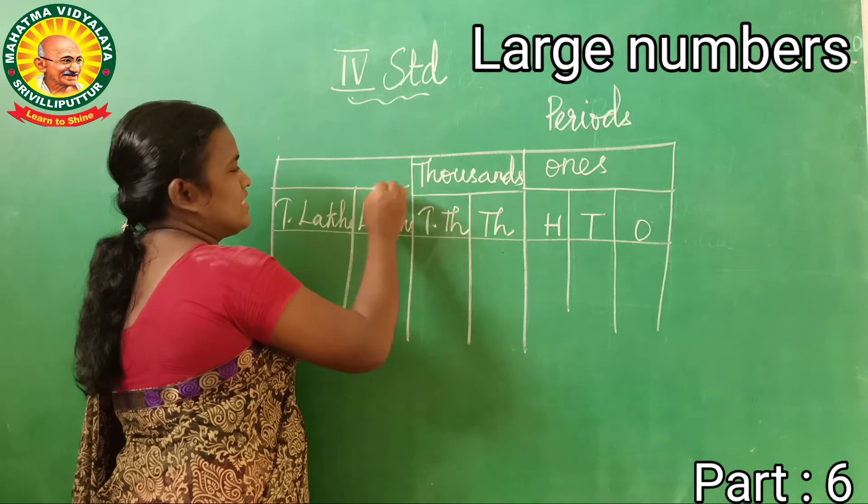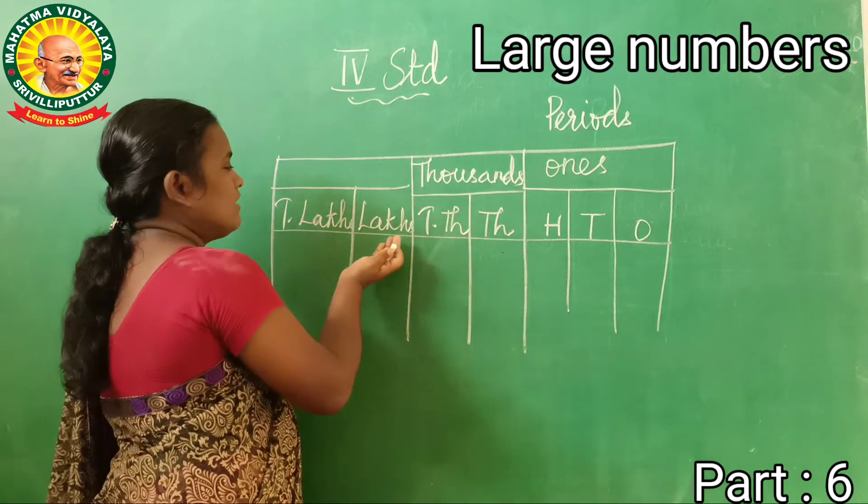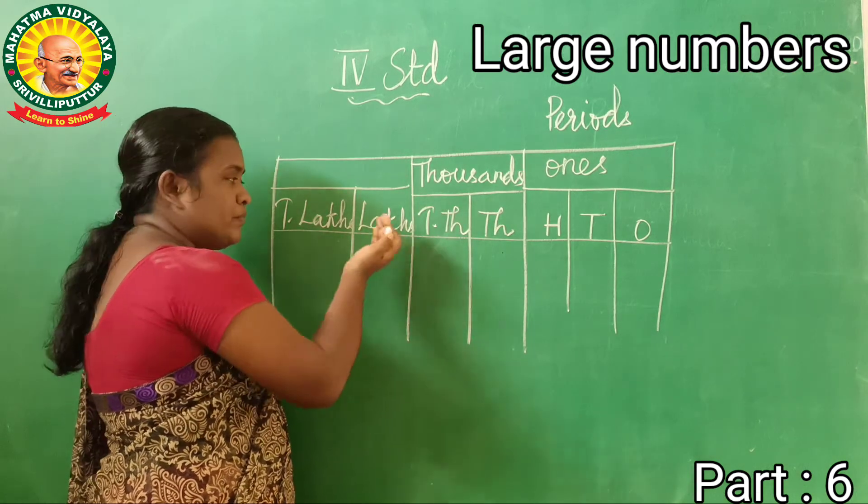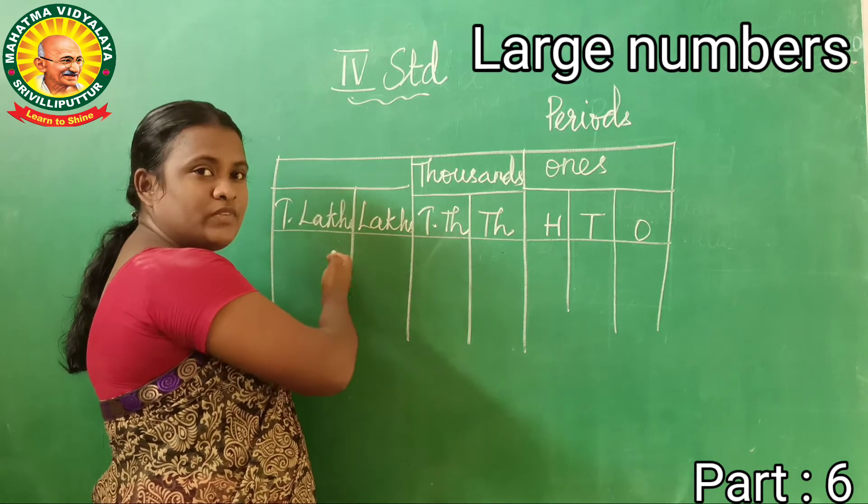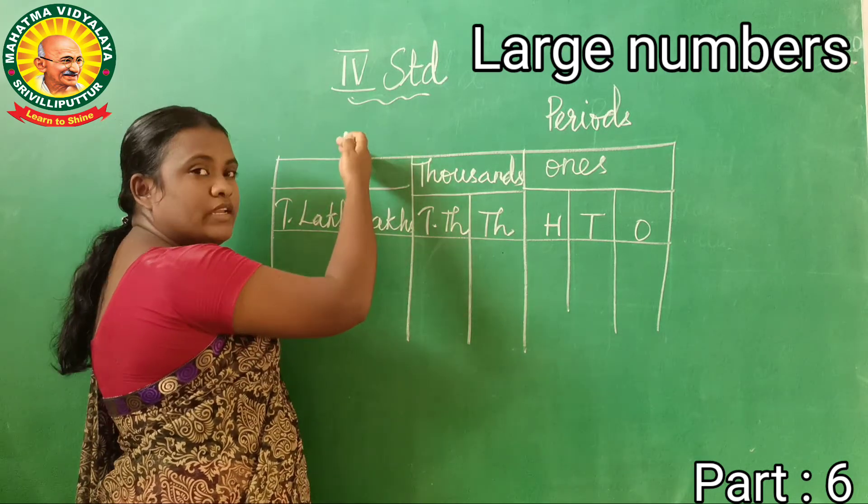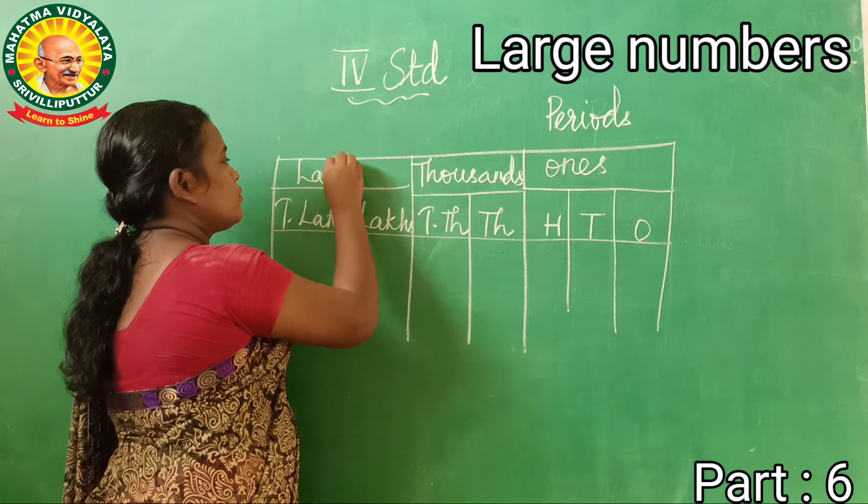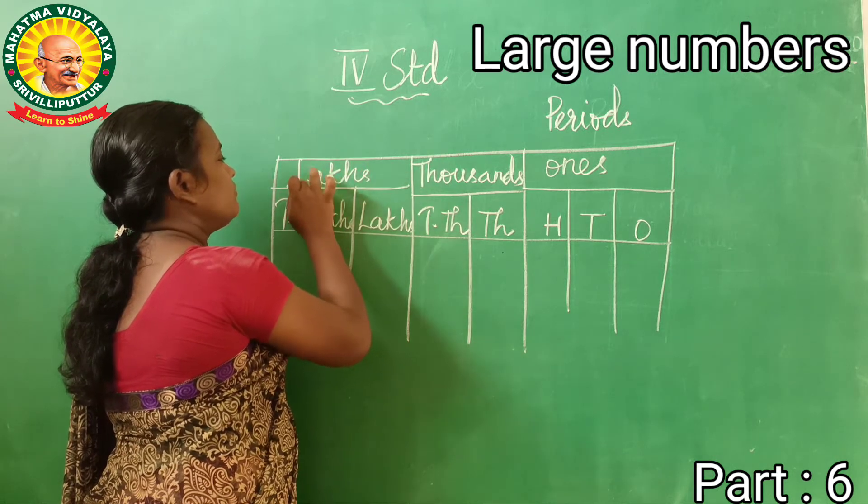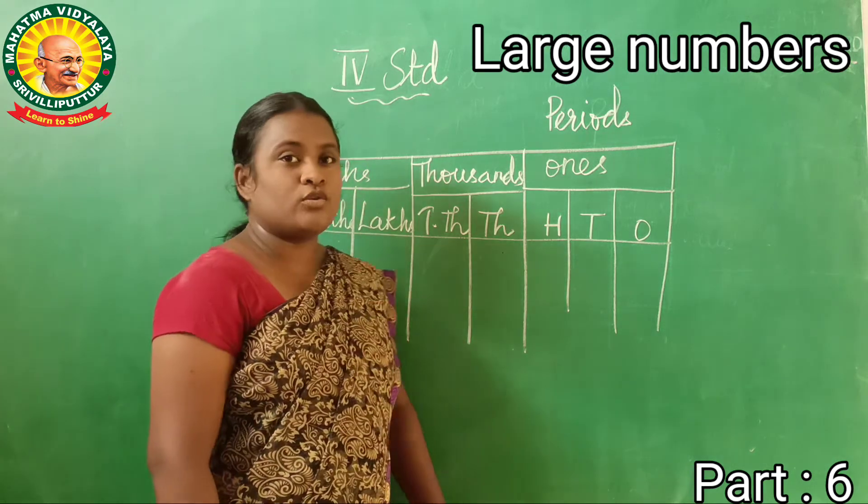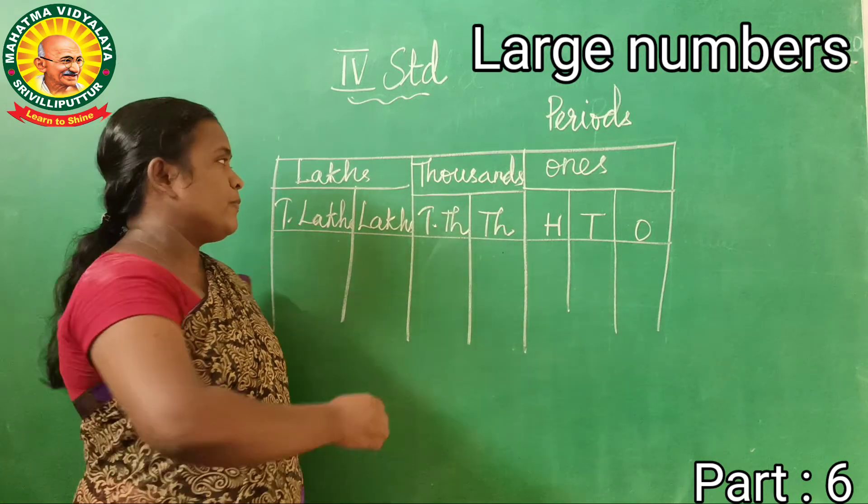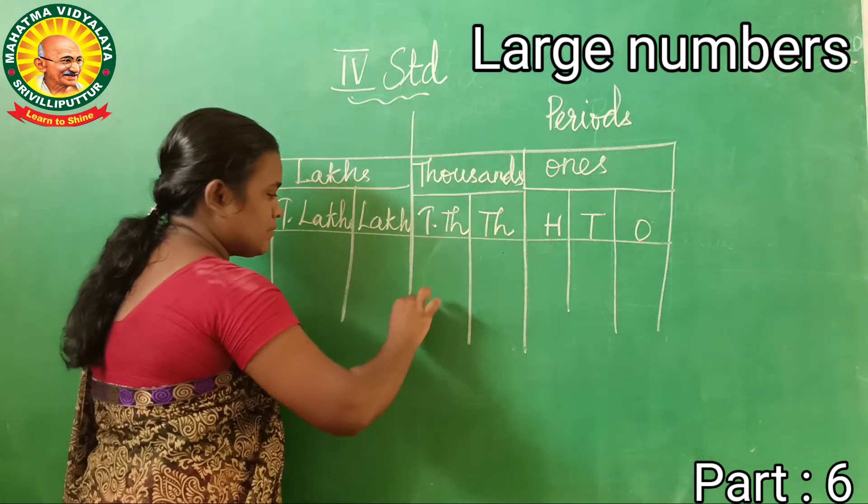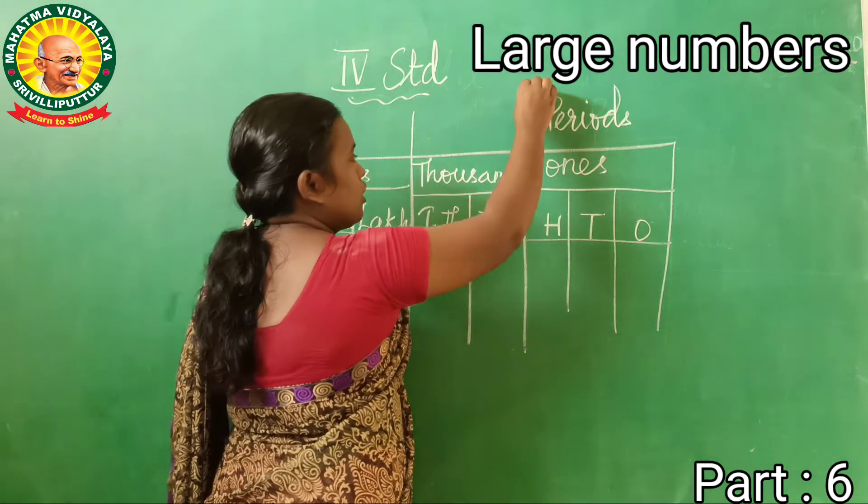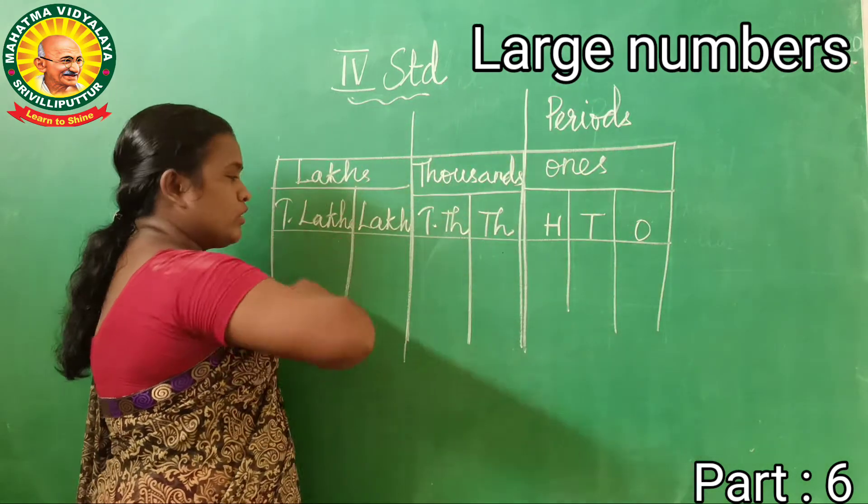And next, someone is saying lakh, very good. Lakhs and ten lakhs in the places like around there, they belong to the period of lakhs. Now we are going to learn how to accept the number. The periods are separated as lakhs, thousands, and ones.